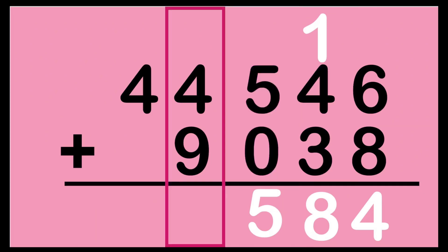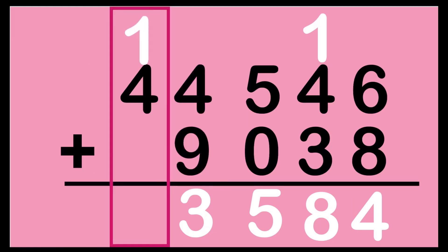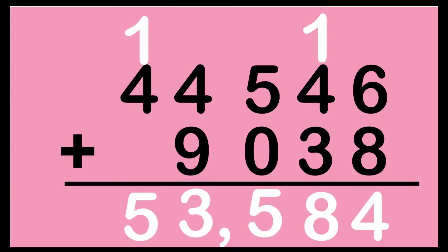Let's proceed to the thousand's place. 4 plus 9 — put 9 on your mind, big number first: 9, 10, 11, 12, 13. We have 13 here. So we can now regroup 1 to the next place value at the ten-thousand's place. So 1 plus 4 — put 4 on your mind: 4, 5. We have 5 here. We can now bring it down because there's no digit at the bottom of digit 4. So the answer is 53,584.